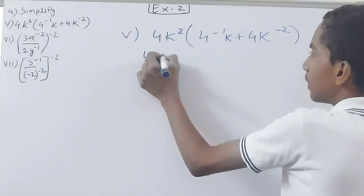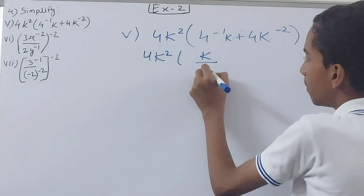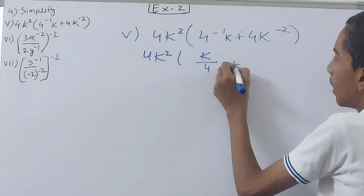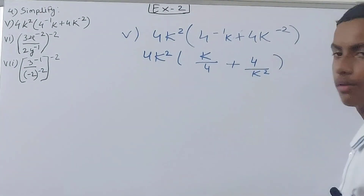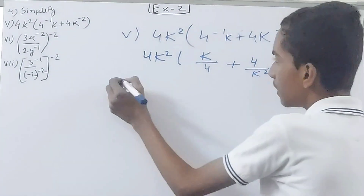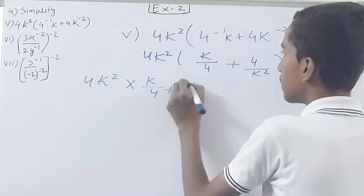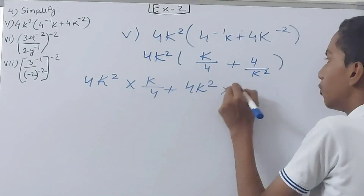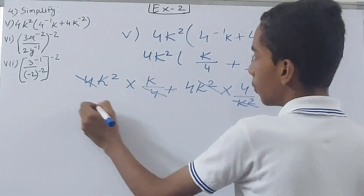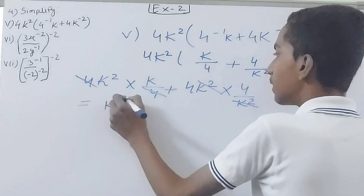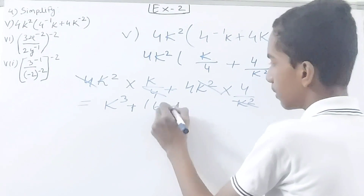The fifth part: we have 4k², and 4 to the power minus 1 becomes 1 by 4, so k to the power 4. Plus 4 upon k squared. We apply the distributive property: 4k² into k⁴ plus 4k² into 4 upon k². The k² and k² cancel, 4 and 4 cancel, leaving k² into k = k³, plus 4 into 4 = 16. So the answer is k³ plus 16.